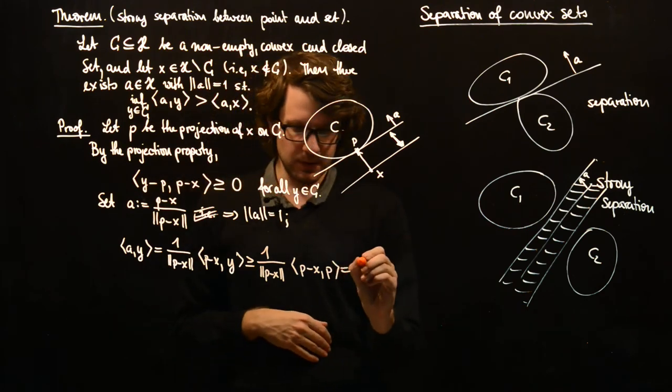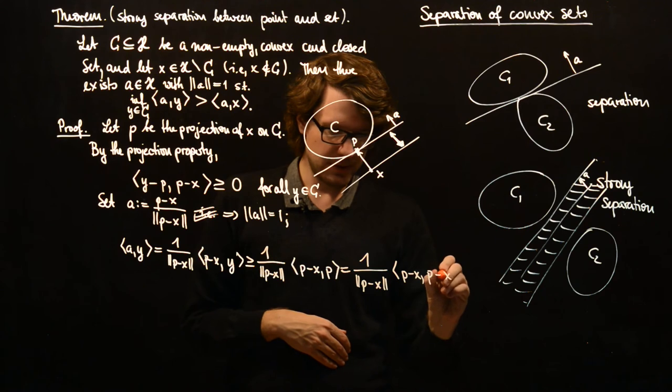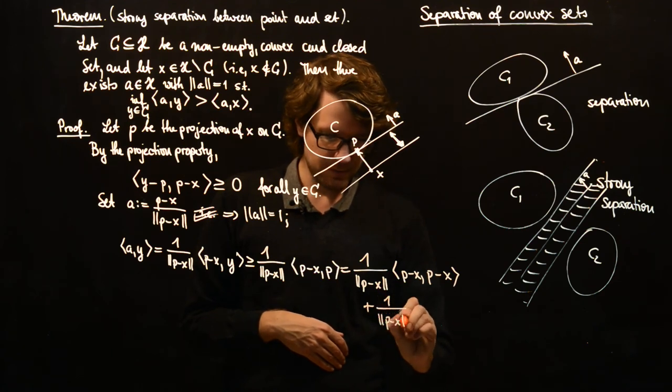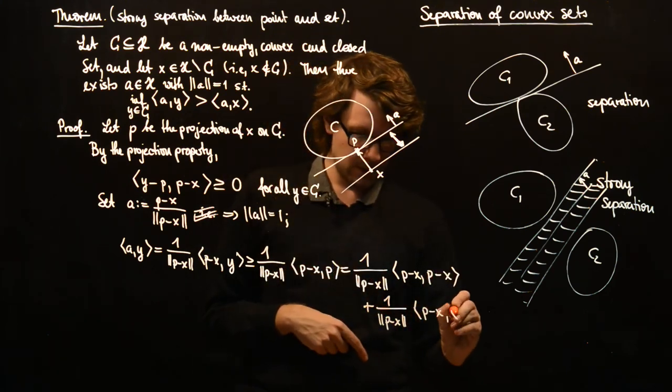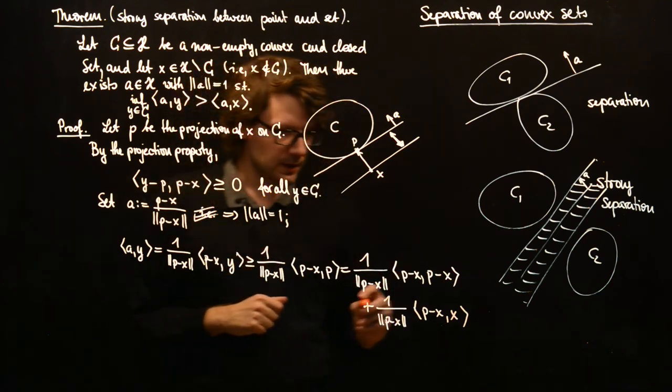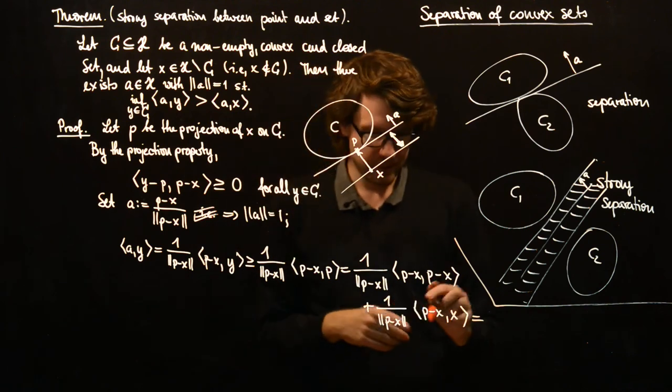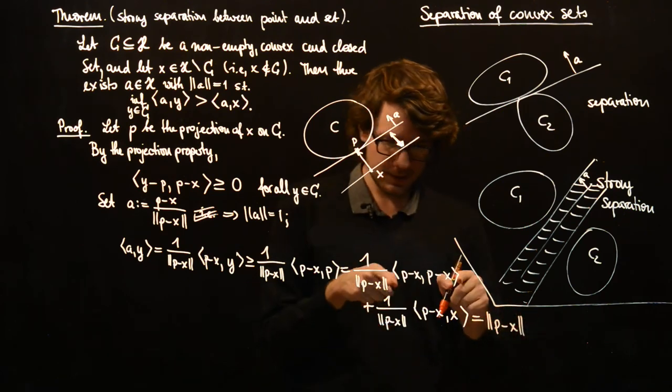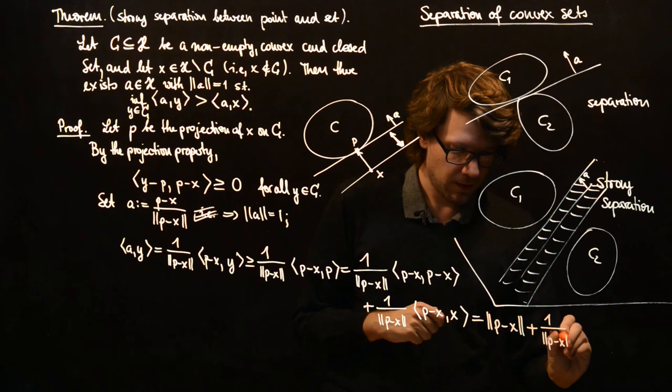And this is equal to 1 over norm of P minus X, inner product of P minus X with P minus X, plus inner product of P minus X. Since we have invented minus X here, we have to balance this equation by adding X again. And this is equal, so this is norm of P minus X squared. So this is norm of P minus X squared divided by norm of P minus X plus 1 over P minus X.